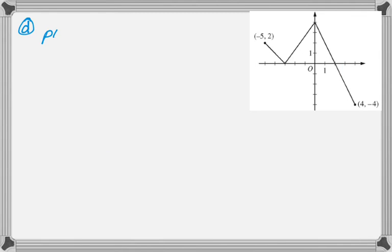Alright, let's take a look at the last part of this question. They define another function for us. So in this case, p of x is f of x squared minus x.